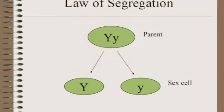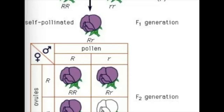Now let's look at the Law of Segregation. Mendel proposed that each pea plant had two hereditary factors for each trait. There were two possibilities for each hereditary factor, such as purple factor or white factor. One factor is dominant to the other. The other trait that is masked is called the recessive factor, meaning that when both factors are present, only the effects of the dominant factor are noticeable.